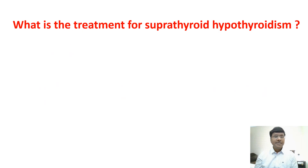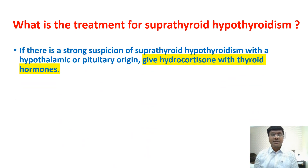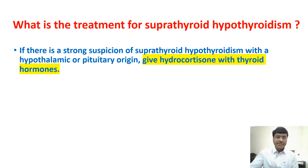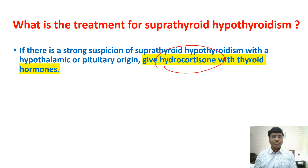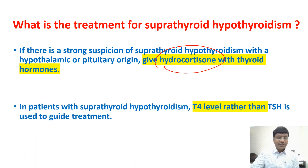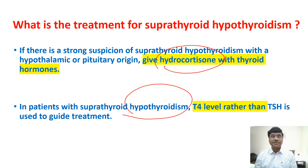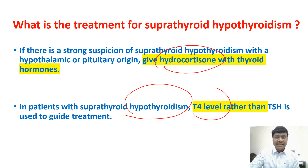For suprathyroid hypothyroidism — pathology in the anterior pituitary or hypothalamus — you need to give hydrocortisone along with thyroid hormone. This is because pituitary pathology also causes decreased ACTH, leading to decreased steroids. In primary hypothyroidism, you monitor TSH; but in suprathyroid hypothyroidism, you monitor T4 levels rather than TSH. This is a very important point to remember.